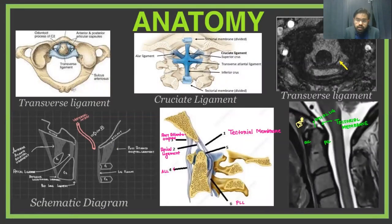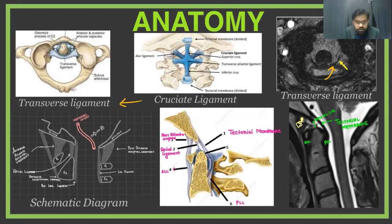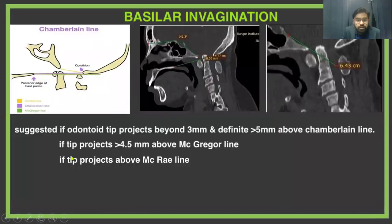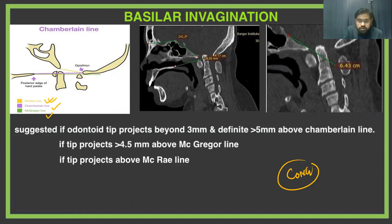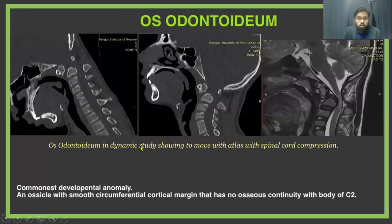This is the anatomy of the atlanto-axial region, that is the CVJ. The most important ligament is the transverse ligament, which is part of the cruciate ligament. Other ligaments include the anterior atlanto-occipital longitudinal ligament, which is continuous as the atlanto-occipital membrane. These are representative images from our study. This is a case of basilar invagination, showing three measurement lines: the Chamberlain line, the McGregor line, and the McRae line. If the odontoid tip projects more than 5 mm above the Chamberlain line or 4 mm above the McGregor line, it is considered basilar invagination. This is os odontoideum, the most common congenital abnormality — it is a well-corticated separate bone, which differentiates it from a type 2 fracture of the dens.